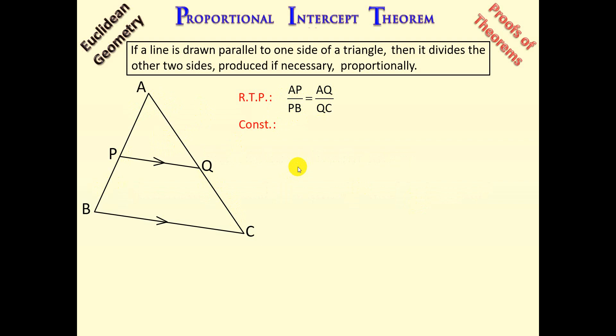So we start with a construction. We're going to join BQ and CP. Next, from point Q we're going to draw a height and name it H1, which is perpendicular to AB. And then we're going to draw from P another height, and name that one H2, which is perpendicular to AC.